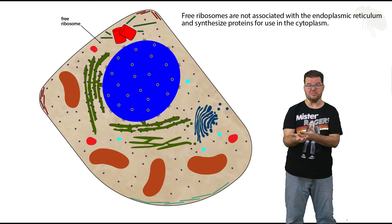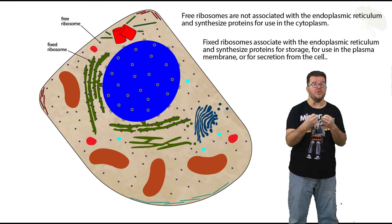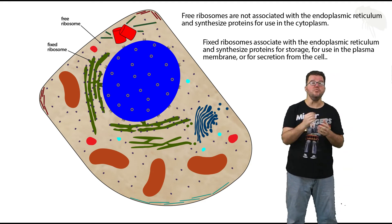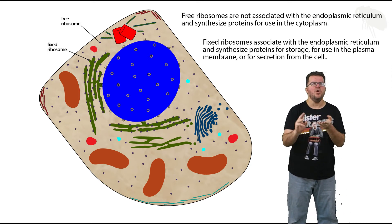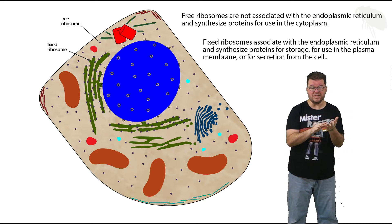The free ribosome is free in the cytoplasm and it builds proteins that will be used in the cytoplasm. The fixed ribosomes are associated with the endoplasmic reticulum, the rough ER specifically, and the proteins they synthesize into the lumen of the ER will be put into storage for use later, will be secreted from the cell, or will be used in the cell membrane. Basically, they're going to be used someplace other than the cytoplasm.